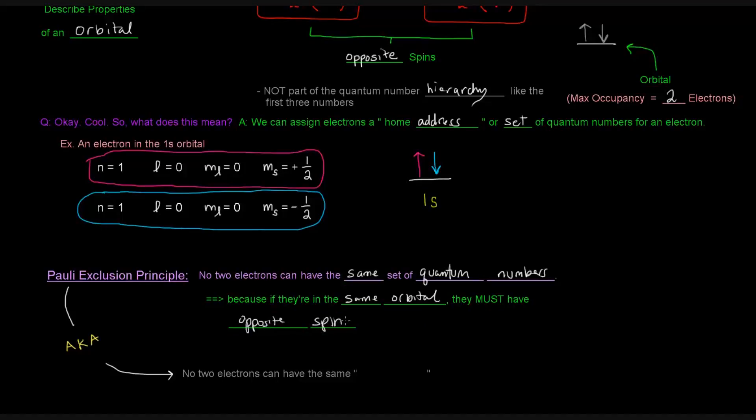You can't have an orbital that has two electrons, and one goes up, and the other goes up. That's not possible. You also can't have them both going down. If they're going to be in the orbital, they have to have one going up and one going down. So that's the Pauli exclusion principle.